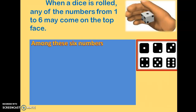Among these six numbers, there are some even numbers, some odd numbers, some prime numbers, and some composite numbers. To solve any problem involving a single die rolling, we have to be clear about all of these things — what are the prime numbers, the composite numbers, the even numbers, and the odd numbers on the die.